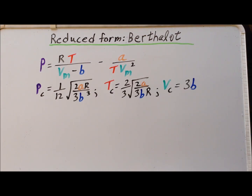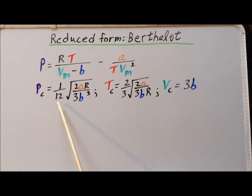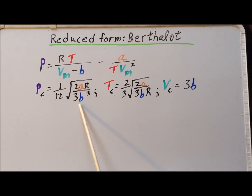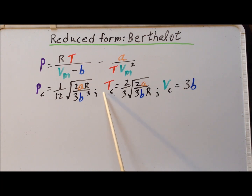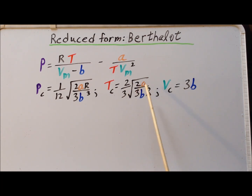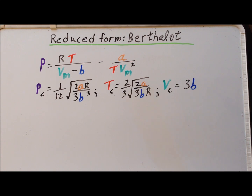We recall the critical constants for the Berthelot equation. The critical pressure P_C is equal to one-twelfth times the square root of 2AR divided by 3B cubed. The critical temperature T_C is equal to two-thirds times the square root of 2AR divided by 3BR. And the critical volume is equal to 3 times B.